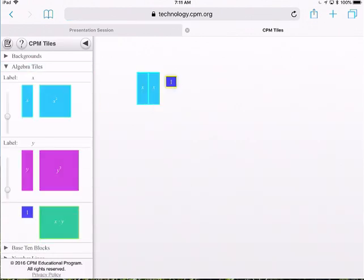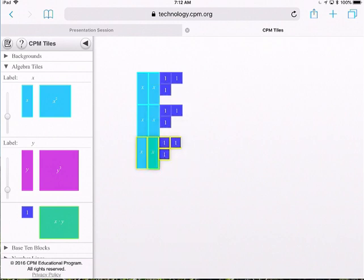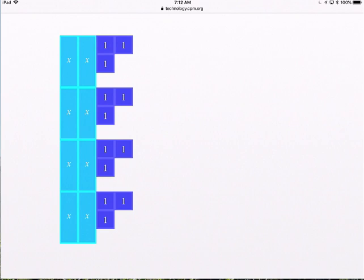So we have 2X and 3. There we go. So if I take that, and I do this 4 times. There's 3. And there is our 4. So now we have 8X tiles and 12 one tiles.